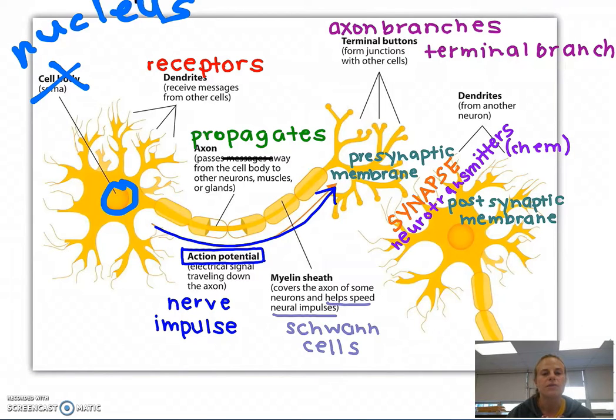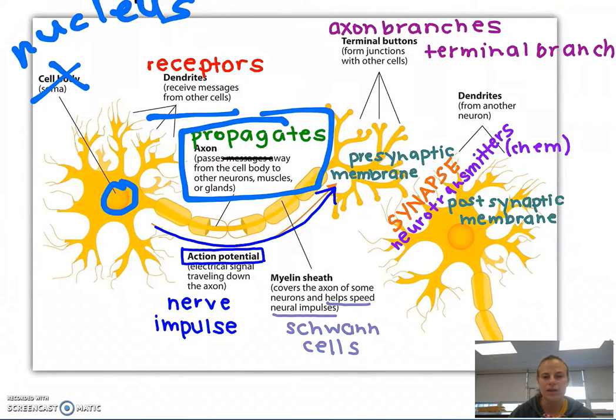It's one neuron where you've got dendrites that are going to receive the message from the other cells. That message then propagates, gets passed along the axon where that message is called the action potential and it travels in one direction along the axon.